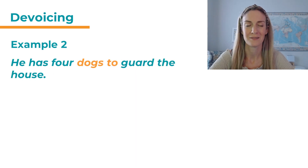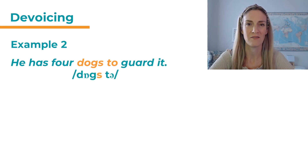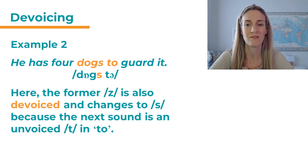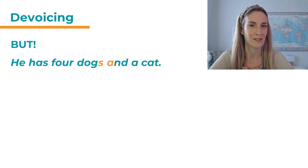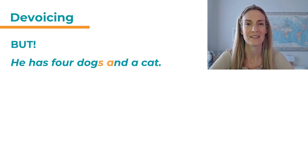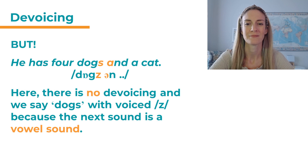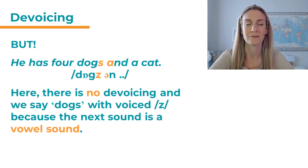Here is another example. Listen: 'He has four dogs to guard the house.' Again, here we have devoicing. The former 'z' is also devoiced and changes to 's' because the next sound is unvoiced — it's an unvoiced 't' in the word 'to'. But what about this sentence: 'He has four dogs and a cat.' Here 'dogs' has a 'z' sound. Why? There's no devoicing here and we say 'dogs' with a voiced 'z' because the next sound is a vowel — a schwa from the word 'and'.